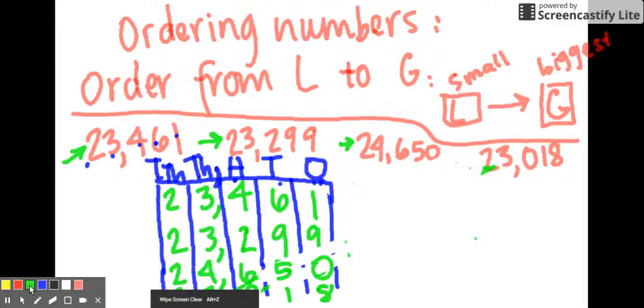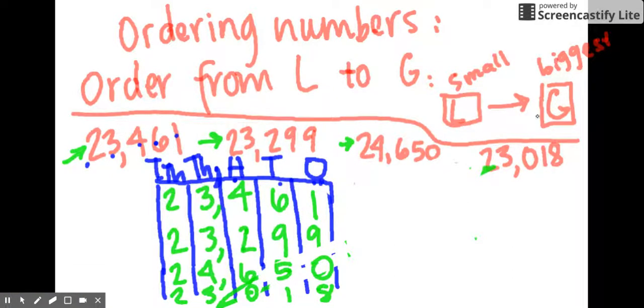The first thing that we're going to want to do is order it and remind ourselves I'm working with the least to the greatest. Let's find the smallest number. We always, always, always start with the largest place value. And in this case, it's the 10,000th spot. Are they all the same? Two, two, two, two? Yep. We can't use this to help us determine what the smallest number is. Go to the next one, and that's thousands. We've got 3,000, 3,000, 4,000, 3,000.